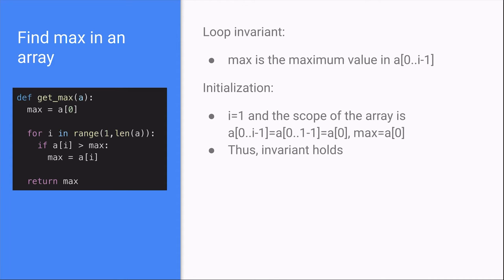At initialization, i is equal to 1 and the scope of the array is a from index 0 to i minus 1, which is equal to a from index 0 to index 1 minus 1, which is equal to the array at index 0. Max is equal to a at index 0, which is true. Thus, the loop invariant holds.